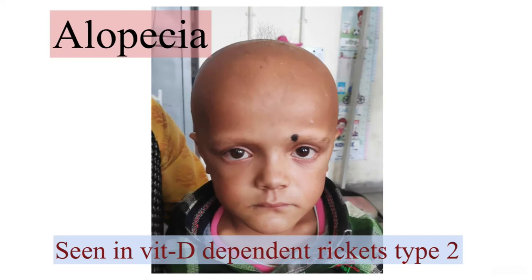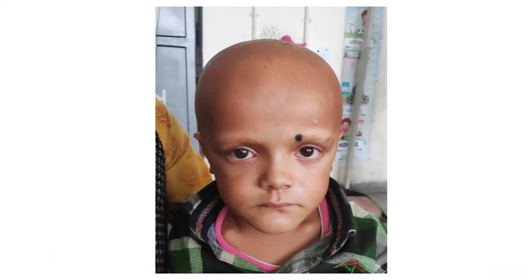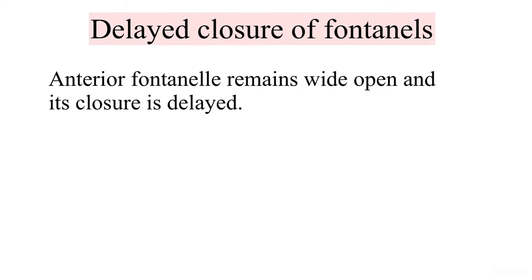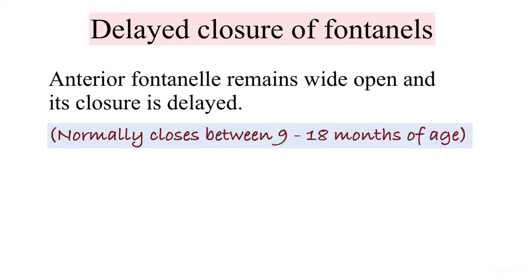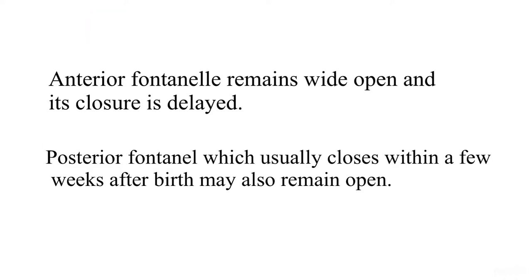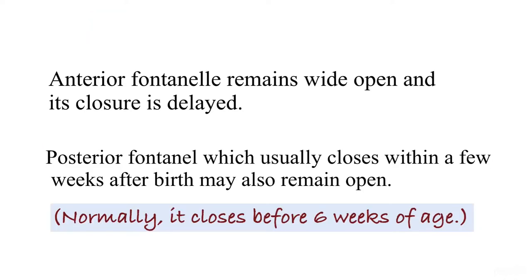Alopecia is a feature which is seen in vitamin D dependent rickets type 2. There is delayed closure of the fontanels. The anterior fontanel, which usually closes between 9 to 18 months of age, remains wide open and its closure is delayed. The posterior fontanel, which usually closes within a few weeks after birth, may also remain open.